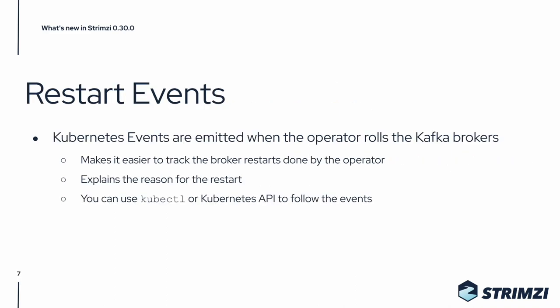The operator now also emits Kubernetes events when it rolls the Kafka brokers. That makes it easier to track the broker restarts done by the operator, and it also explains the reasons for the restart. You can use kubectl or the Kubernetes API to follow the events.